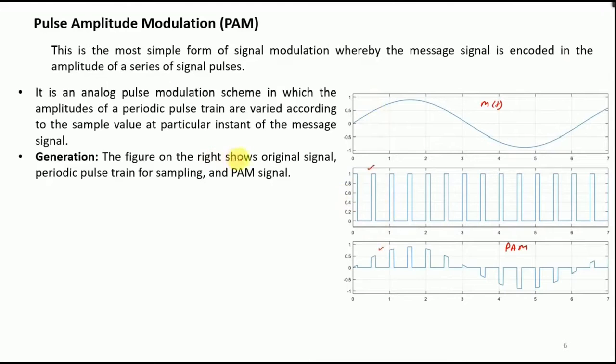For the generation, we have the original signal, periodic pulse train, and the PAM signal. The width and position of the pulses in PAM is identical. That is, though the amplitude is varying, the position is at a certain time period Ts, and this is our time period. So the pulse would be appearing after that specific time period Ts. The amplitude is varying, but the position is consistent with respect to the sampling time period of the impulse train.